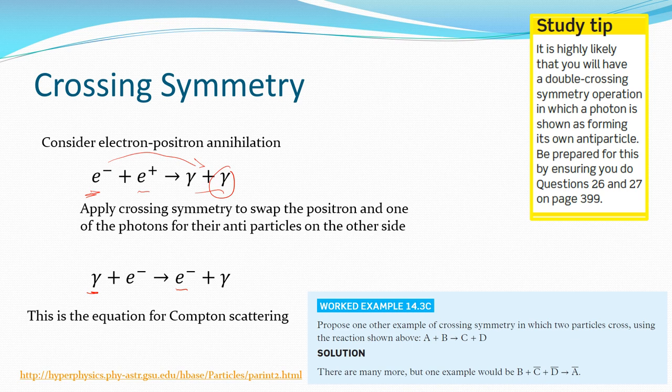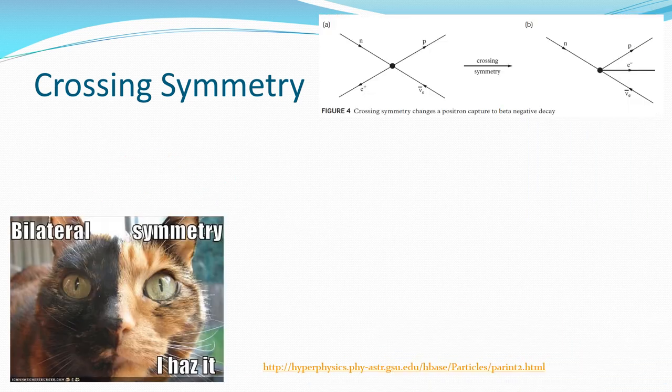So what we've done there is our positron has moved over the other side and become an electron. And one of the photons has moved over to the reactant side there of our interaction. And this is like an example of Compton scattering that we looked at in the last section, where an electron and a positron can bounce off each other. All right, crossing symmetry.